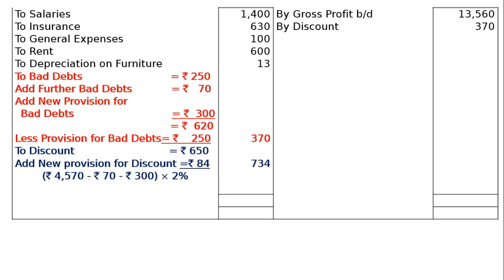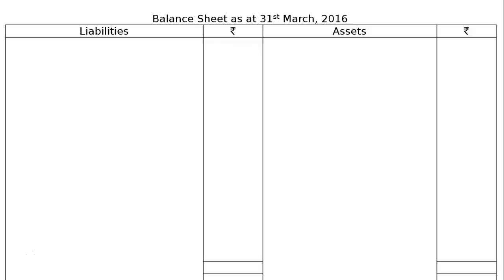Then total the credit side: Rs. 13,930. Deducting all expenses gives net profit carried down of Rs. 10,083. The balance sheet is as at 31st March 2016.